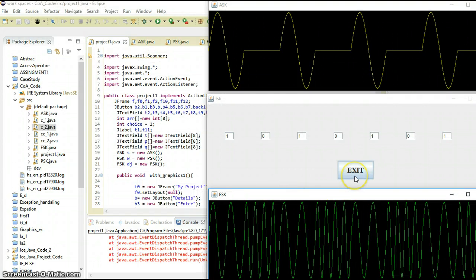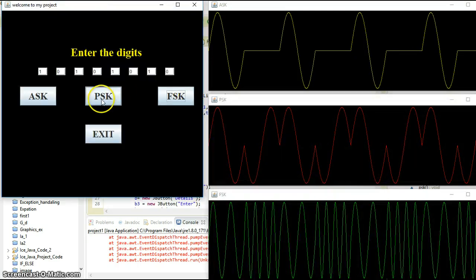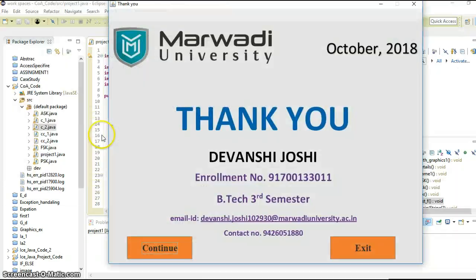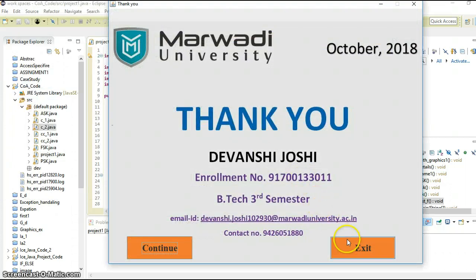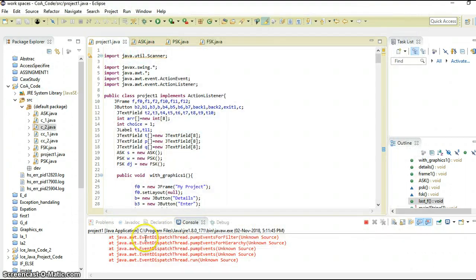Click on FSK, this is the waveform of FSK. Now exit the project. Thank you. If you want to continue the project then you can continue it, otherwise exit the project. Thank you.